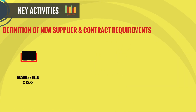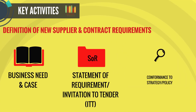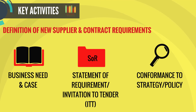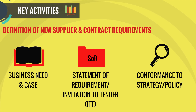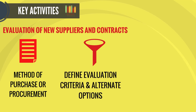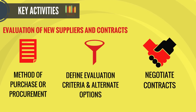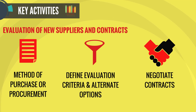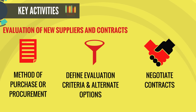Let us look at some of the key activities. Definition of a new supplier and contract requirement includes a business case, statement of requirement, and conformance to strategy. Evaluation of new suppliers includes method of procurement, establishing evaluation criteria and alternate options, negotiating contracts, targets, closure, renewal, and so on.